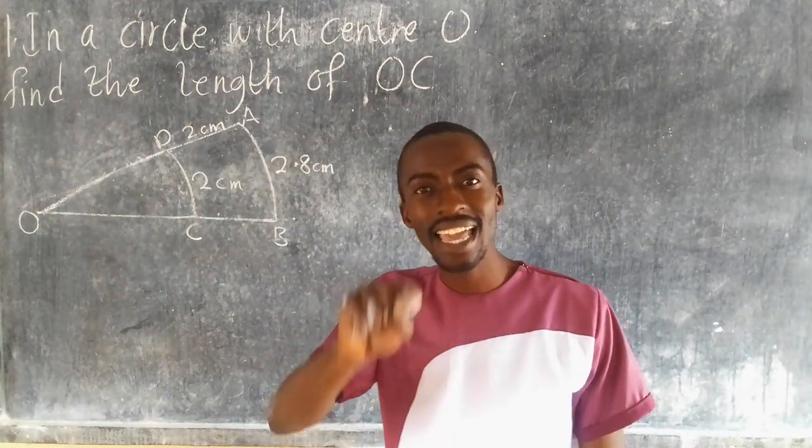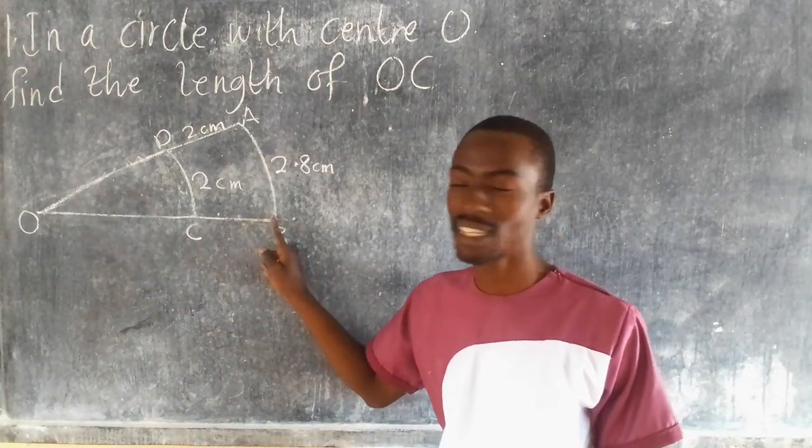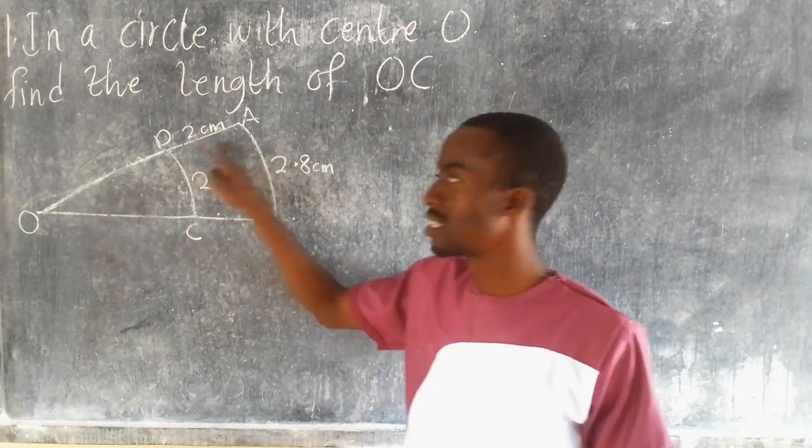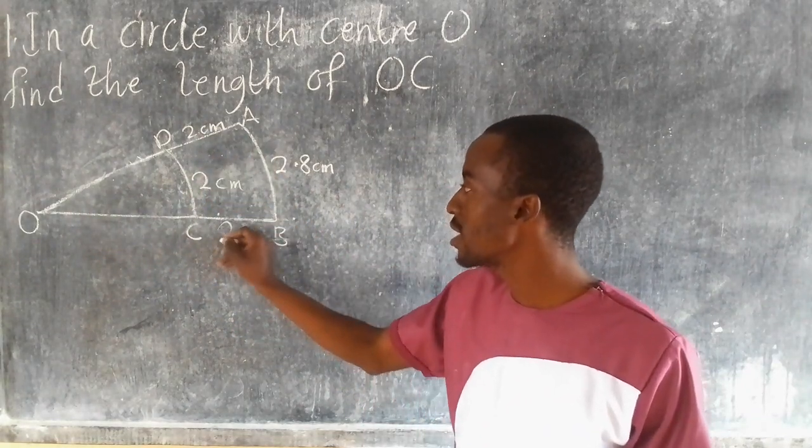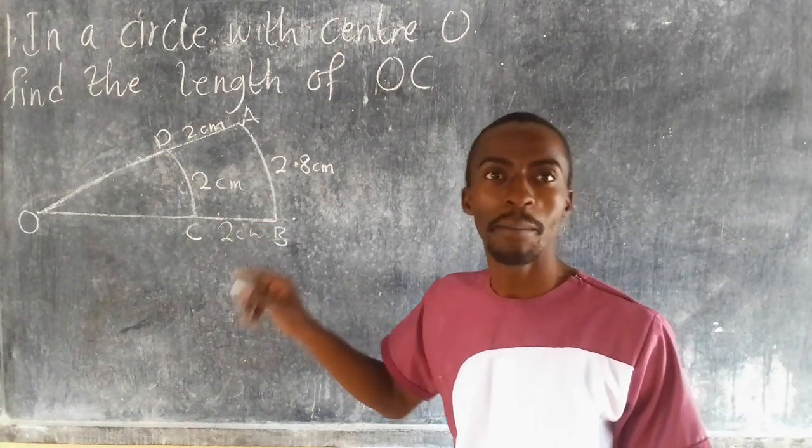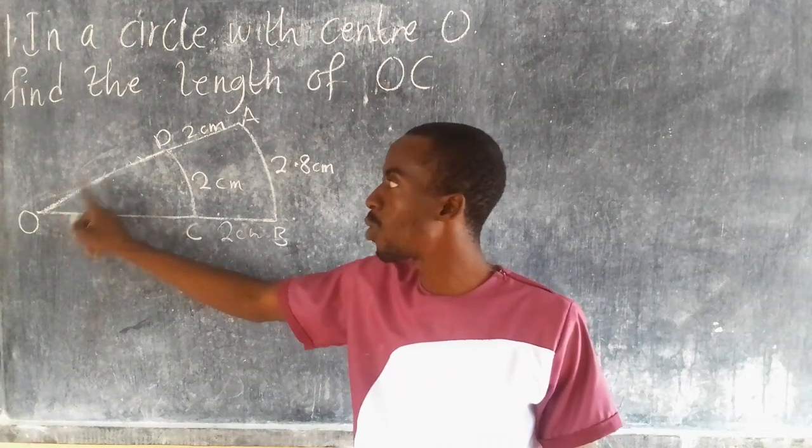Now, we need to understand that a line from the center to the circle is the radius, meaning this radius equals this radius. So here I have 2, meaning here I have 2 as well. The value I have to find for OC is equal to OD.